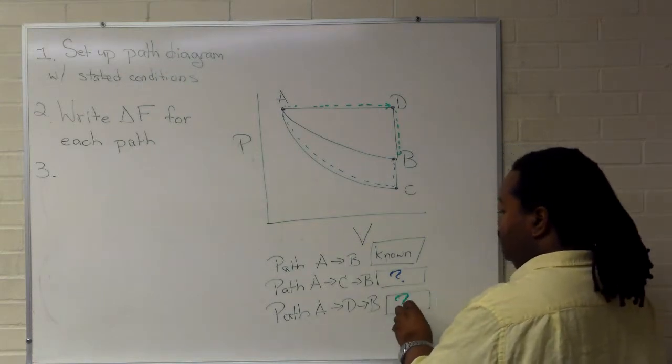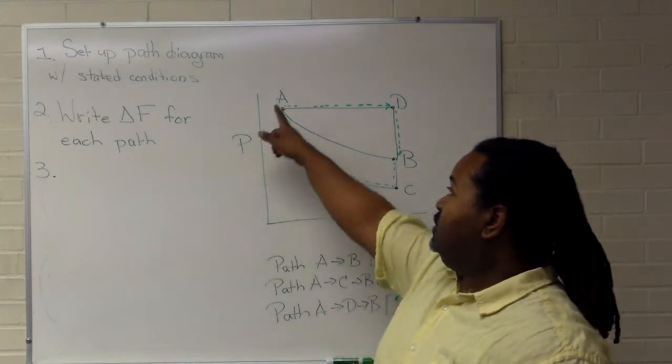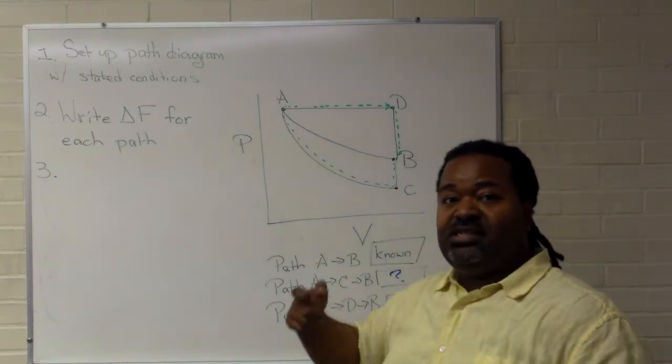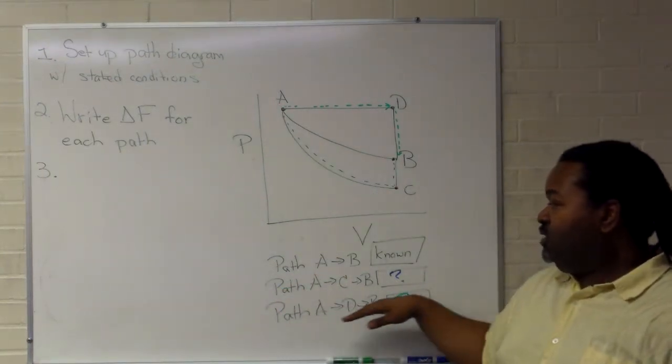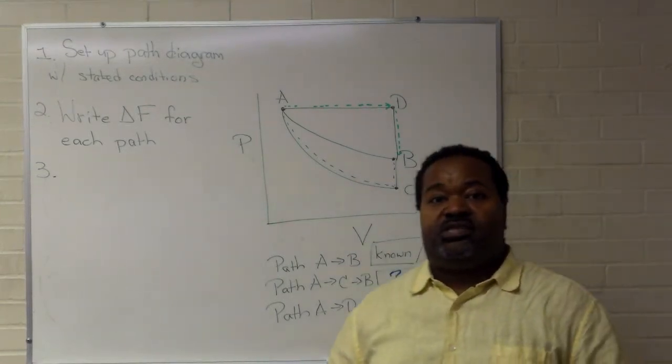And so once we've used the defined conditions as well as the specifics of points A, B, C, and D to determine what the change in our function is for each path, we're prepared to move to step three.